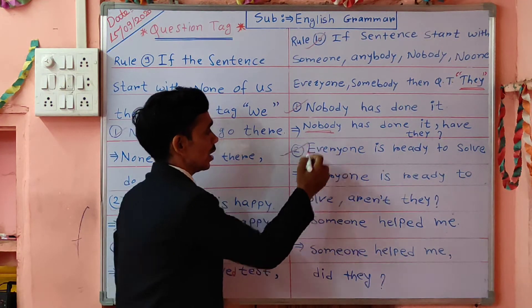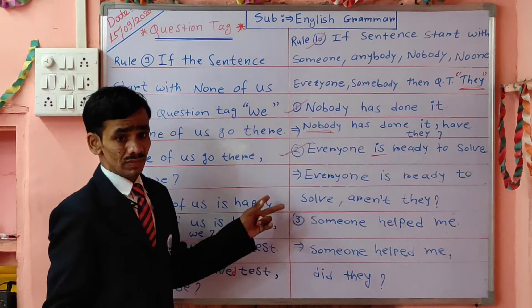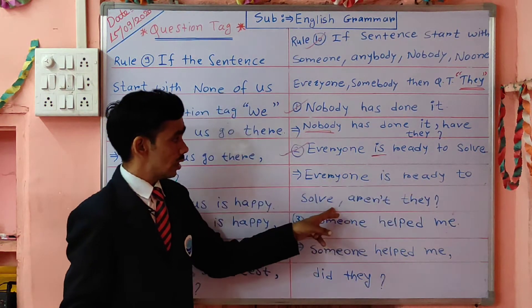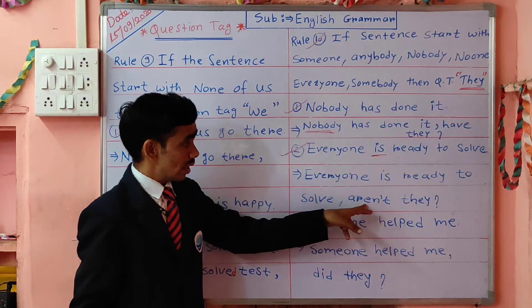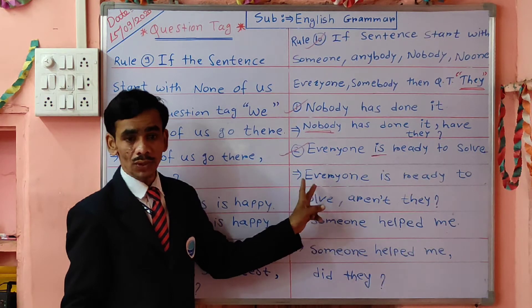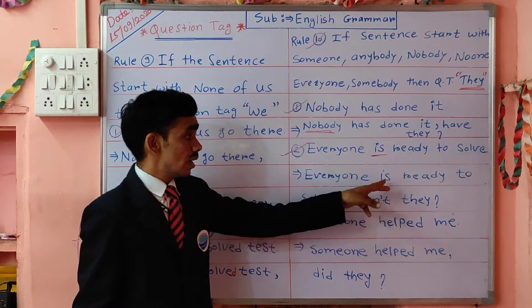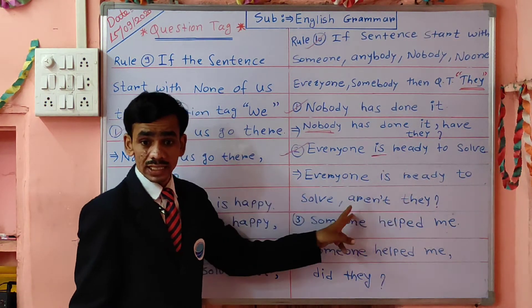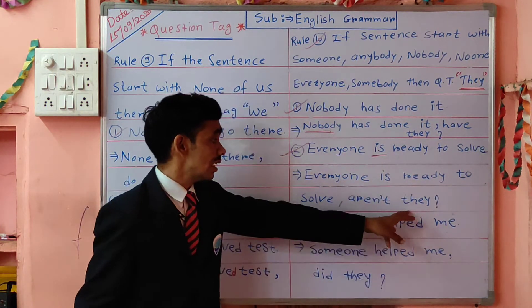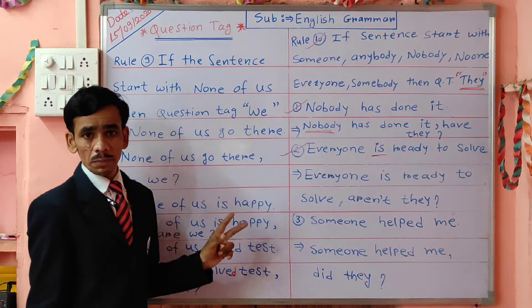Next example: 'Everyone is ready to solve.' The question tag is 'aren't they.' Now, 'everyone' has a positive meaning, so we take a negative question tag. And we take 'they' because of 'everyone' — that is our rule. We don't take 'isn't'; we take 'aren't' because 'they' is plural. So: 'Everyone is ready to solve, aren't they?' Do you understand properly?